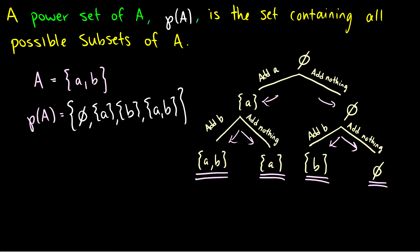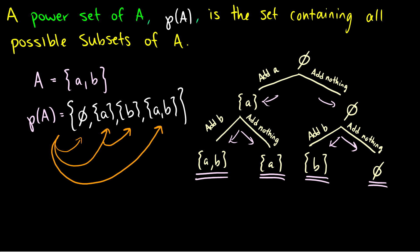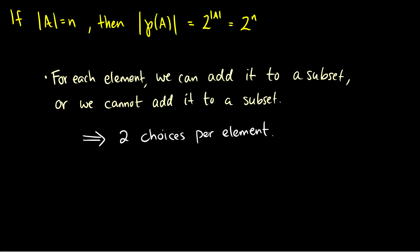Another way to think about this: you can have no elements — the empty set — one element at a time — A or B — or all pairs. The reason I showed the tree was to talk about the size of the power set. If your original set A has N elements, then the size of the power set will be 2 to the N. For each element, we're either adding it to a subset or we're not, so there are two choices per element.